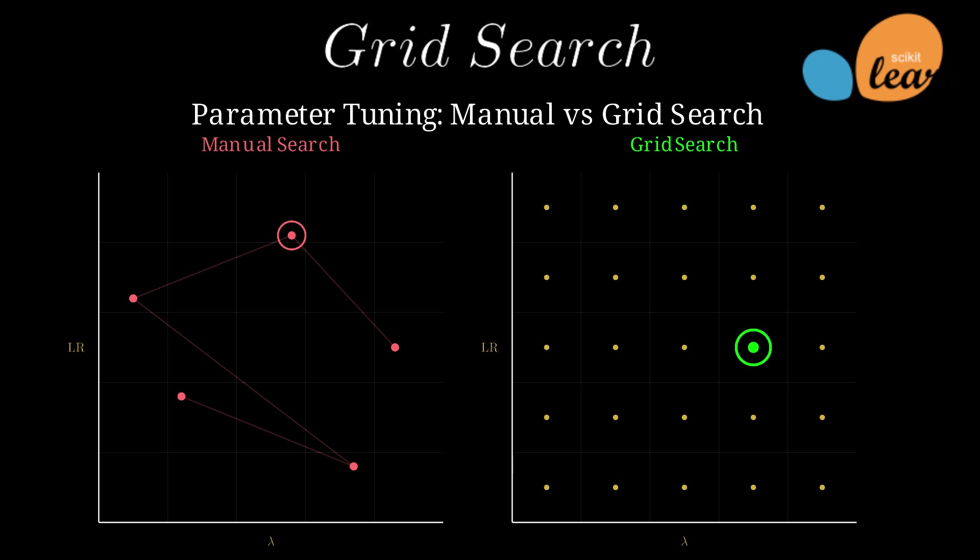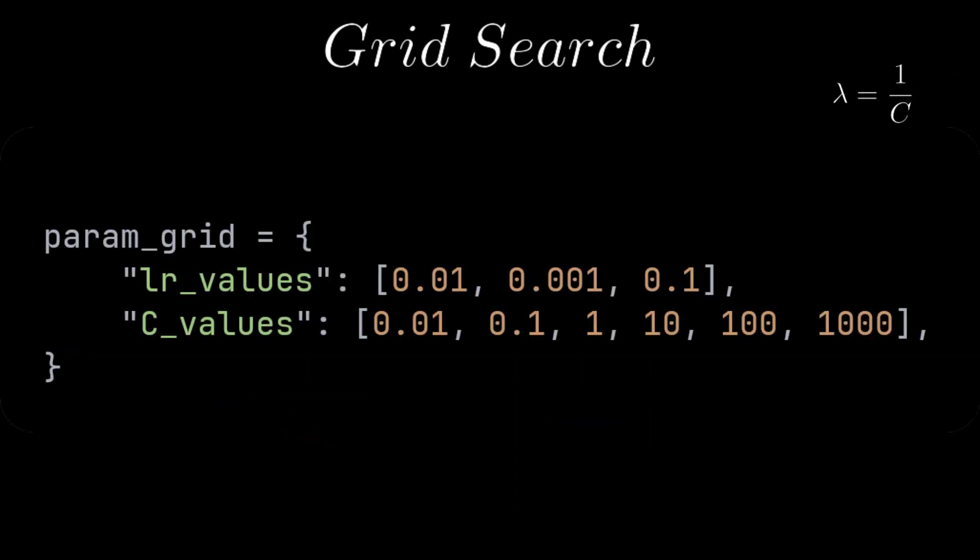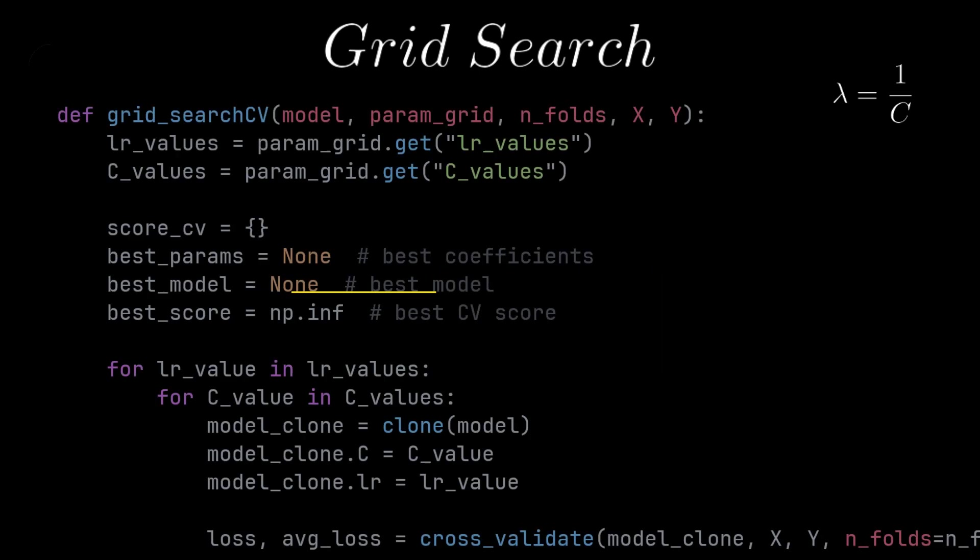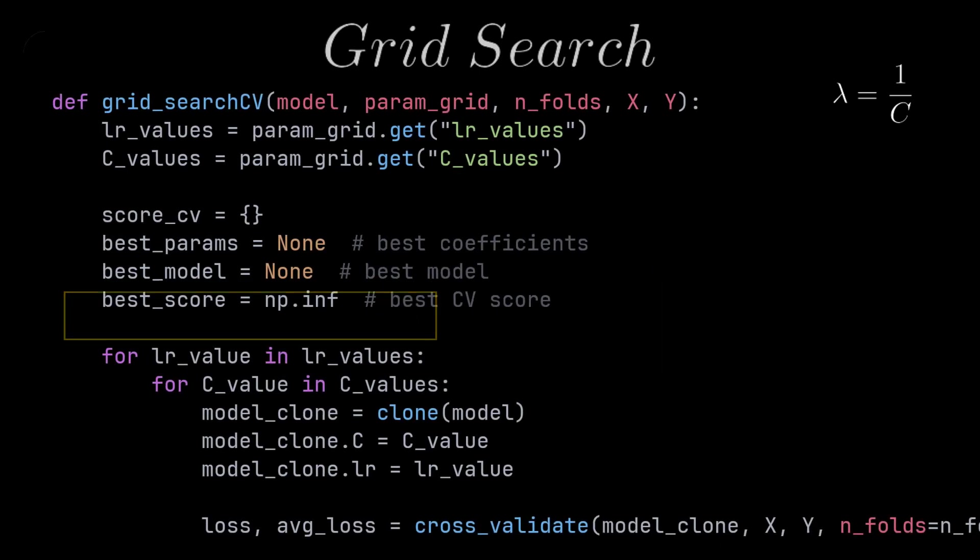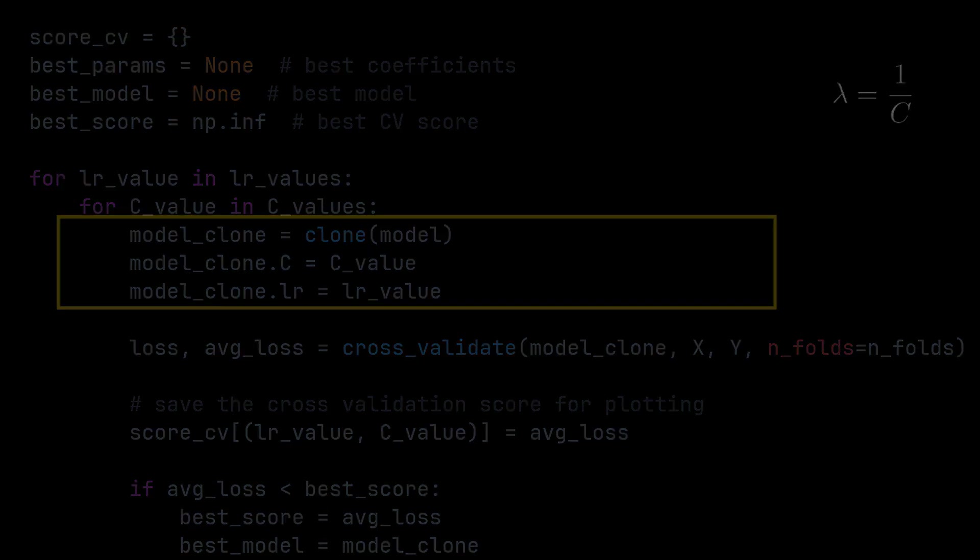First, we define a grid of lambda and learning rates, and we initialize the best score to infinity. And then we construct a nested loop that goes over all the possible combinations. Inside, we clone the model so we don't affect our main model.